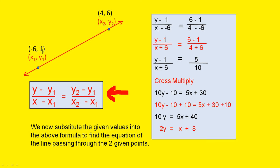So y minus y1 is y minus 1. So that's the top part. Now, x minus x1 is x minus minus 6, which is this part. X minus minus 6 equals y2 minus y1, which is 6 minus 1. That's 6 minus 1 over 4 minus minus 6, which is 4 minus minus 6.